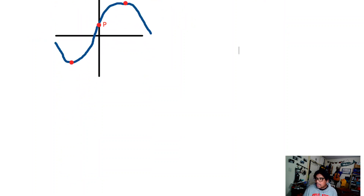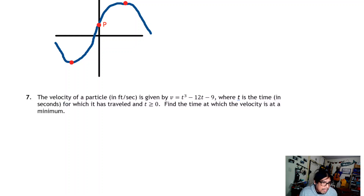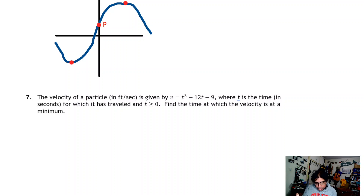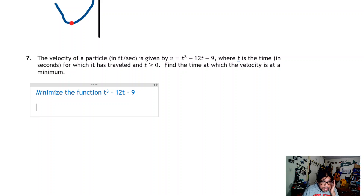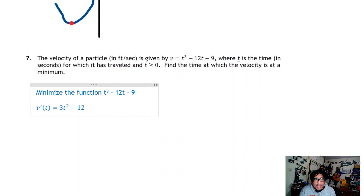Let's take a look at question 7. This says that the velocity of a particle in feet per second is given by t cubed minus 12t minus 9, where t is time in seconds and t is greater than or equal to zero. We're supposed to find a time when the velocity is a minimum. This sounds like we want to minimize a function — the function we want to minimize is t cubed minus 12t minus 9. For this problem, I would not recommend saying the first derivative of velocity is acceleration and writing a of t here instead of v of t.